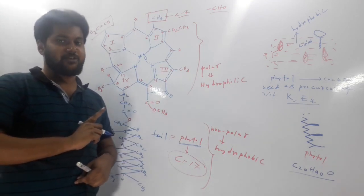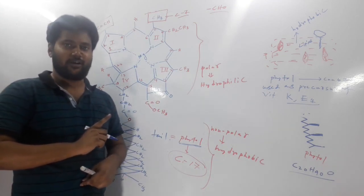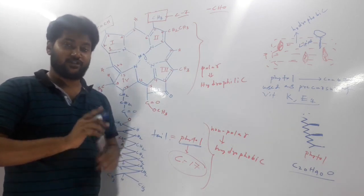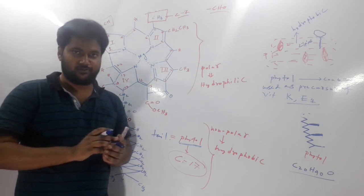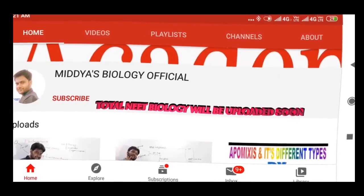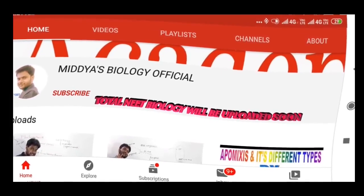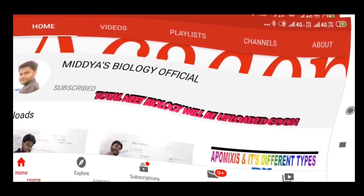When the phytol chain is detached from chlorophyll, it can be used as a precursor for vitamin K and vitamin E. This concludes the detailed study of the structure of the chlorophyll A molecule.